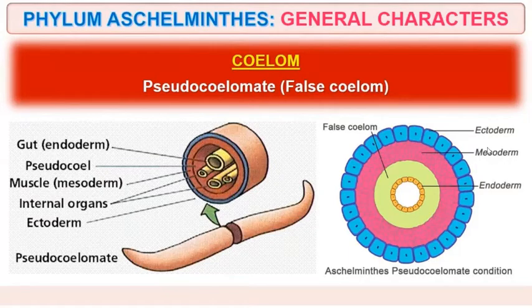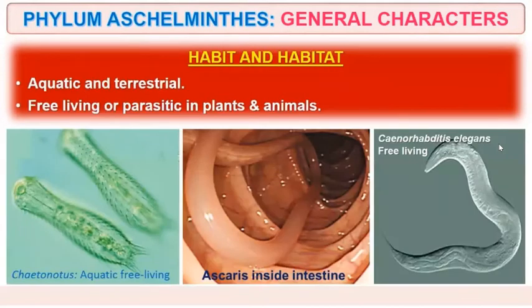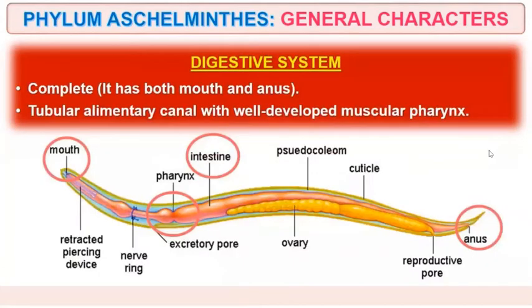These organisms show the coelom in the form of a pseudocoelom — that is a false cavity — meaning the mesoderm is in the pouch. Regarding habit and habitat, they are aquatic and terrestrial. Some are free living and some are parasitic, living inside plants and animals.